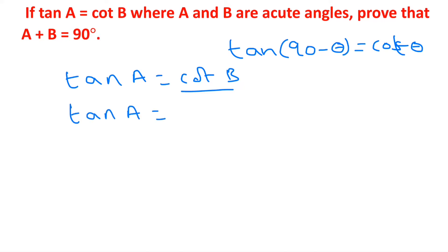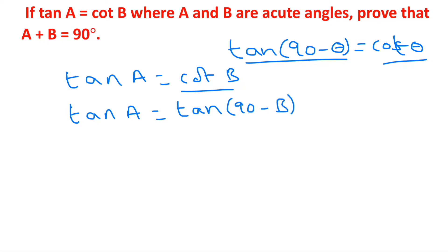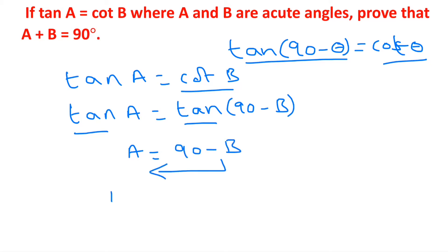So cot B can be written as tan(90 minus B). Now if we eliminate tan on both sides, A equals 90 minus B. Transposing B to the left-hand side gives us A plus B equals 90 degrees.